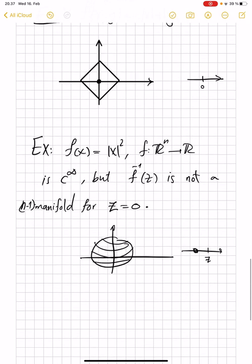So the Sard theorem, if you have more regularity for f, but so the pre-images of most points are manifolds, are not just rectifiable sets, which are close to being manifolds. They are honest manifolds. However, even in that case, you can claim this for almost every point in the image, and not every single point there.